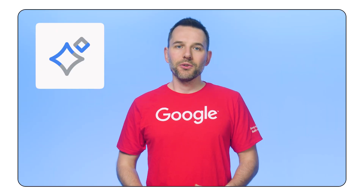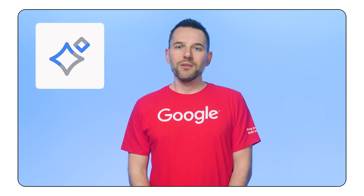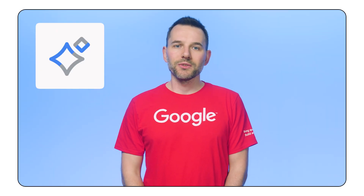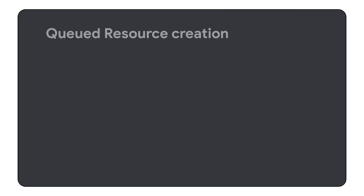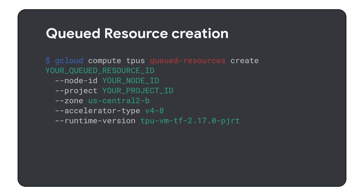Lastly, for the TPU enthusiasts who want to interact directly with their VMs, there is the QueuedResources interface. Although it's not part of the DWS platform, it works on a very similar basis. Like in the previous examples, you can specify the number of TPU machines you need and the system will make sure you get the whole set or nothing.